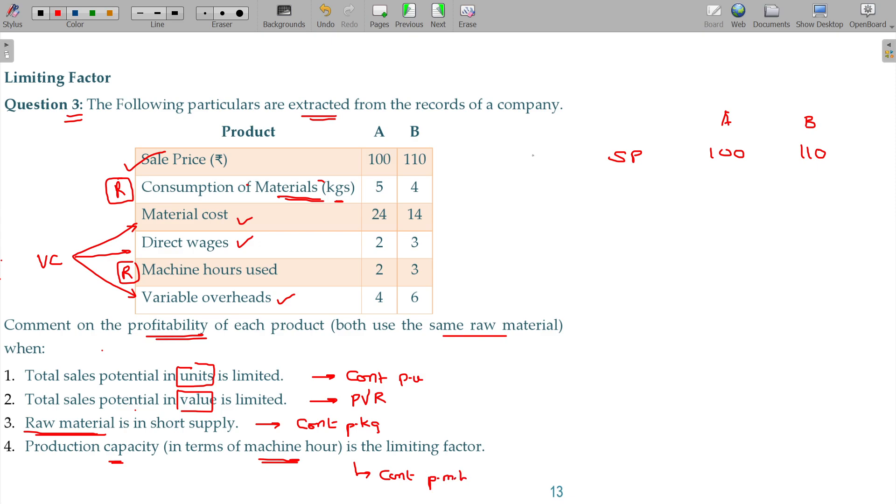So I can sum up the variable costs - these three values: 24, 2, and 4 for one product, and for the other it's 23. Then the contribution here being 70 for A and 87 for B.